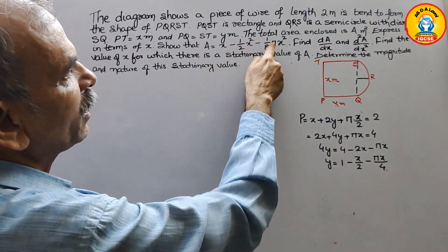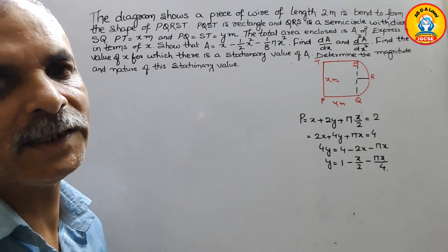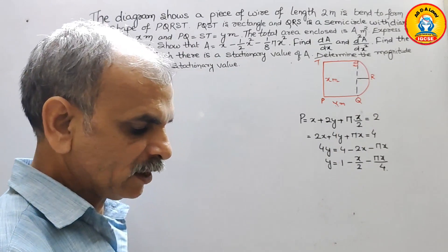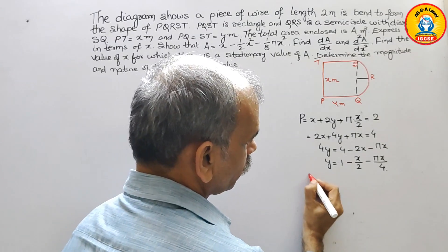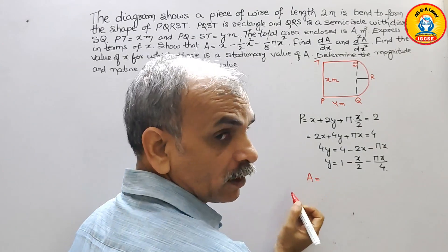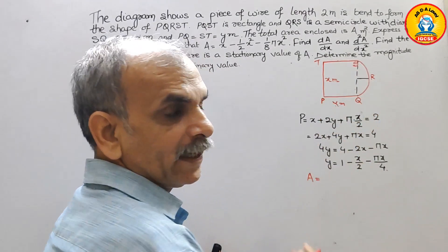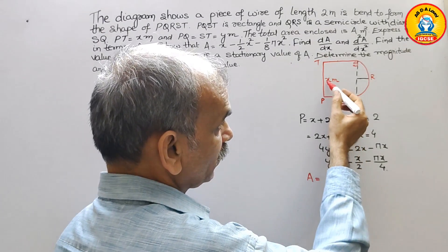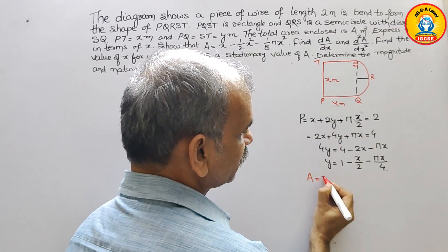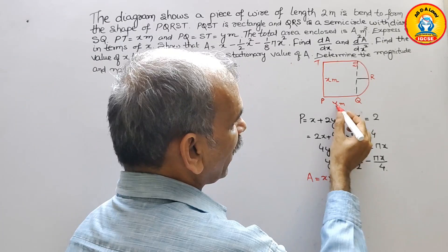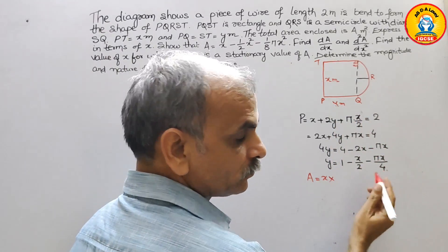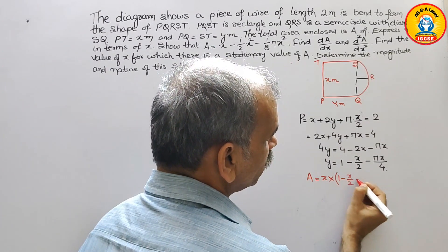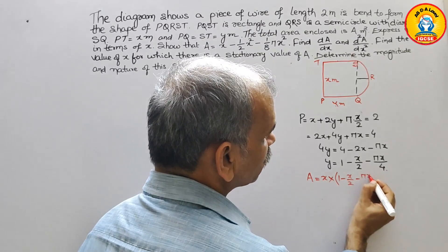This is the value of Y. Now for the area: the rectangle area is length times breadth, which is X times Y. Substituting Y, we get X multiplied by the bracket 1 minus X/2 minus pi·X/4.